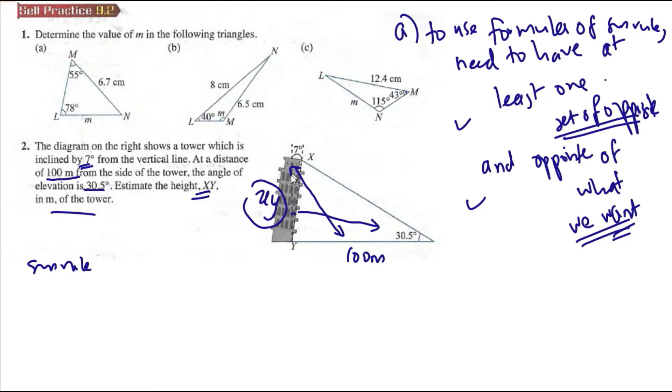So what angle exactly is this? xy over sin 30.5 is equal to 100 over sin theta.